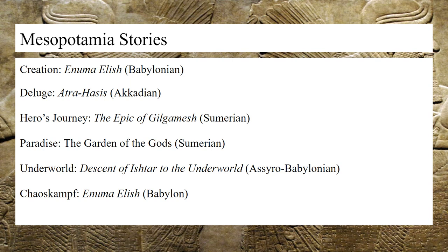Next is the paradise motif, which is noted in the Epic of Gilgamesh in regards to the Garden of the Gods, where Gilgamesh meets the goddess Siduri, who points him in the direction of Udnapishtim in order to help his quest for immortality.